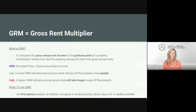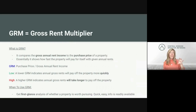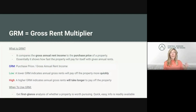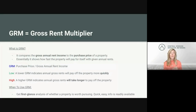Moving on, we're going to talk about the GRM, or gross rent multiplier. Gross rent multiplier essentially compares the gross annual rent income to the purchase price of the property — it shows you how fast the property will pay for itself given annual rents. GRM is calculated as purchase price divided by gross annual rent income. This is a really easy back-of-the-napkin calculation you can do when you're looking at a property, estimating rents, and estimating what you want to purchase the property for. A lower GRM is better — it indicates the gross annual rents will pay off the property more quickly.